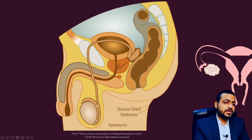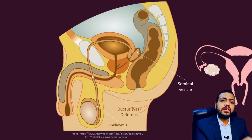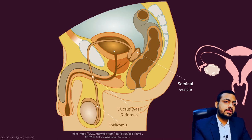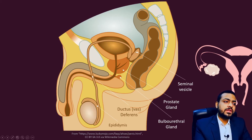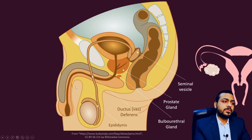After maturing in the epididymis, they come into the ductus deferens or vas deferens, and from here they go into the urethra. In the urethra, a special fluid called seminal fluid is mixed with these sperms. This fluid is contributed by secretions of three glands: the seminal vesicle, which contributes about 60 percent; the prostate gland; and the bulbourethral gland. These secretions form what we call semen or seminal fluid, and during ejaculation these sperms mixed with seminal fluid are released outside through the penis and urethra.